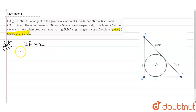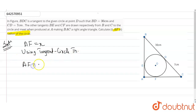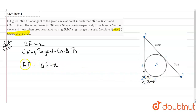Using the tangent circle theorem, which states that if two tangent segments are drawn from the same external point, the segments are equal. So from external point A, we get AF equals AE equals x.